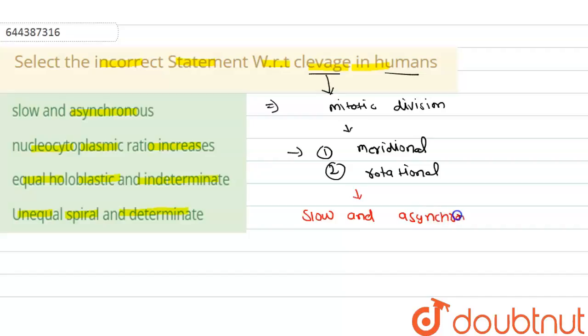If we talk about the second one, in the human there is holoblastic cleavage and this is indeterminate.